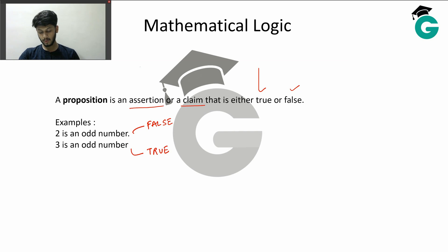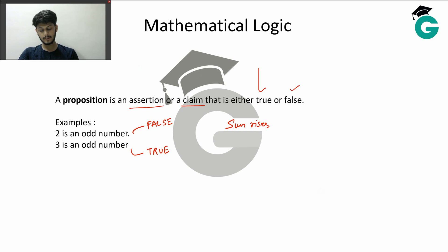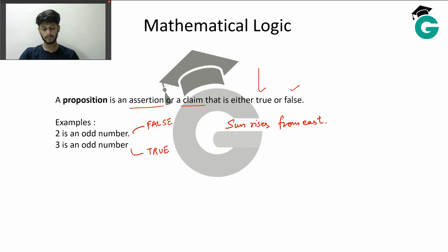You go anywhere in this world, if you tell them that 3 is an odd number, they'll say that's true. Another general example can be 'the sun rises from the east' — well, this is true everywhere.